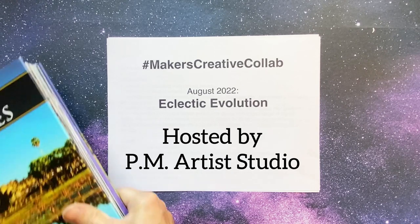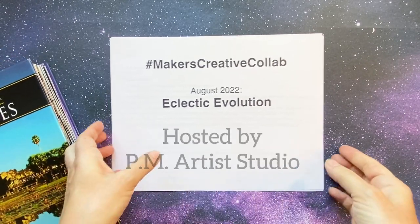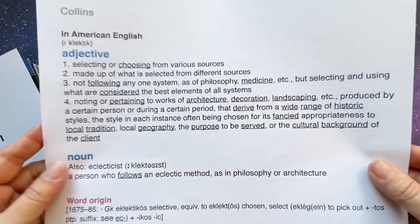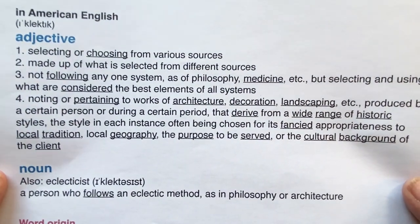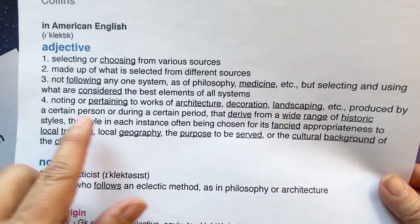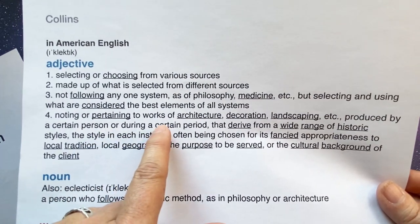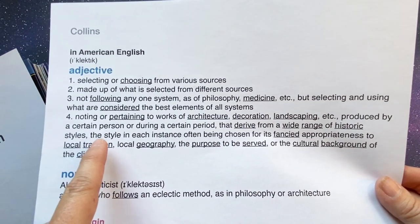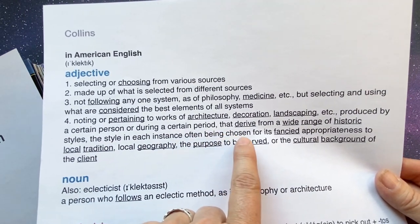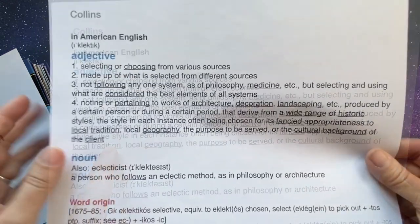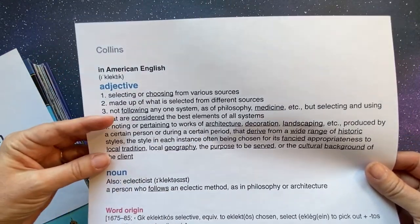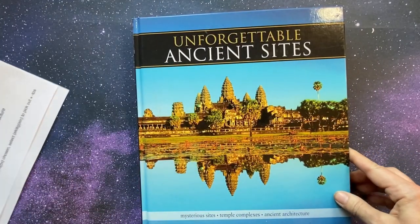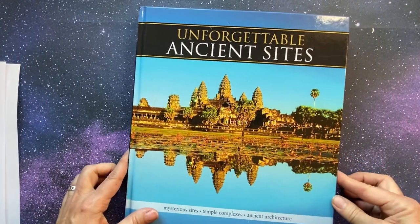Most people know what eclectic means — it's got a few definitions, choosing from various sources, etc. I'm looking especially at this one: noting or pertaining to works of architecture, decoration, or landscape produced by a certain person or during a certain period that derived from a wide range of historical styles. That's kind of the definition I used to inspire my project.